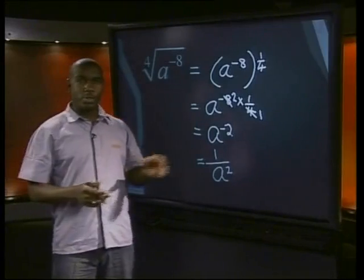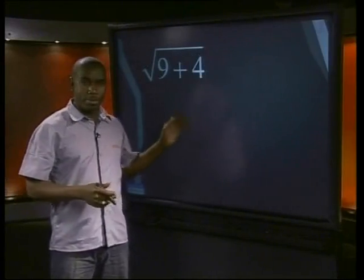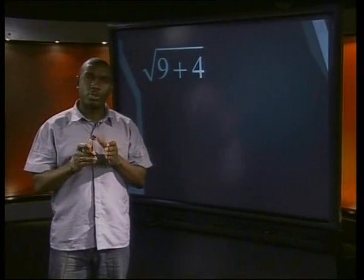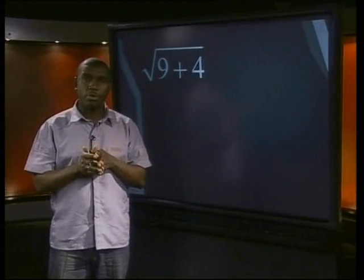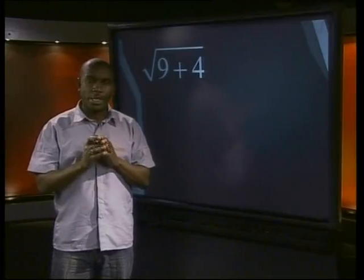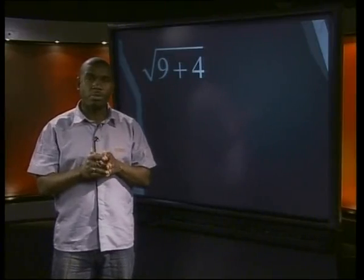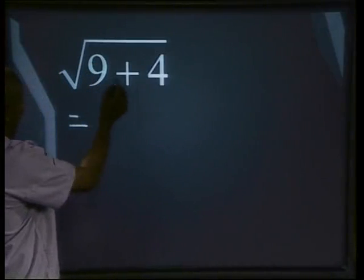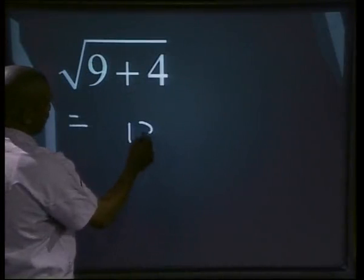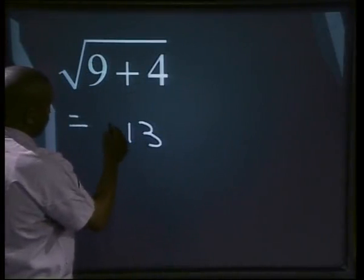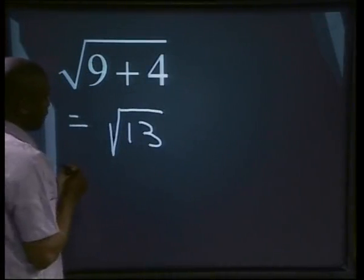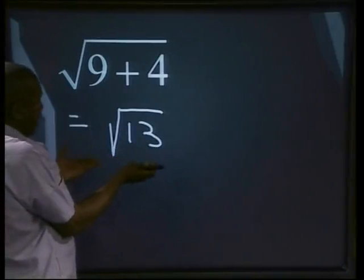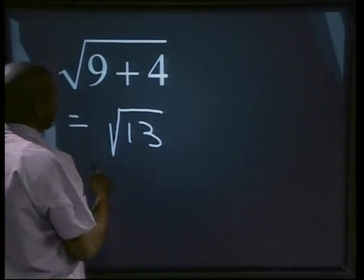Now try this one with the root sign. Be careful, because the square root acts like a bracket around the two terms, 9 and 4. You must first add the 9 and the 4. 9 plus 4 equals 13, so we have to find the square root of 13. But 13 doesn't have a square root because it's not a perfect square, so the square root of 13 is our answer.